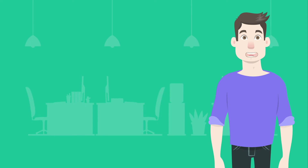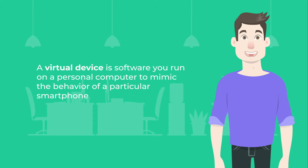Today I will tell you briefly about virtual devices, an alternative to a real smartphone that QA engineers often use in testing. The virtual device is software you can run on a personal computer to mimic the behavior of a particular smartphone. It gives an idea of how a program will run on a designated device, even if you do not have that device in possession.